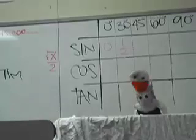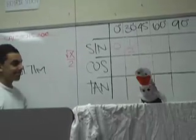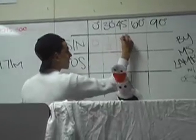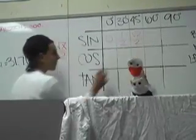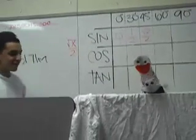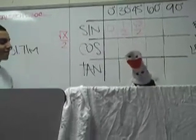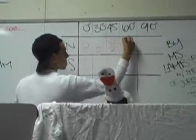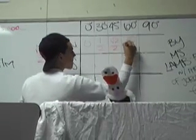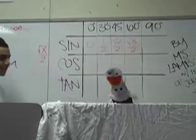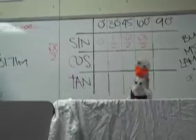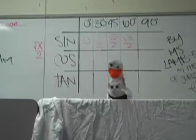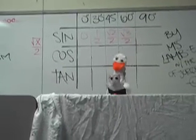You fill in the values of 45 degrees and you get the square root of 2 over 2. Very good. For sine of 60, you fill in the values, you get the square root of 3 over 2. And this one's very nice — this is one of my favorites. When you plug in the values for sine of 90 degrees, you get the answer 1.